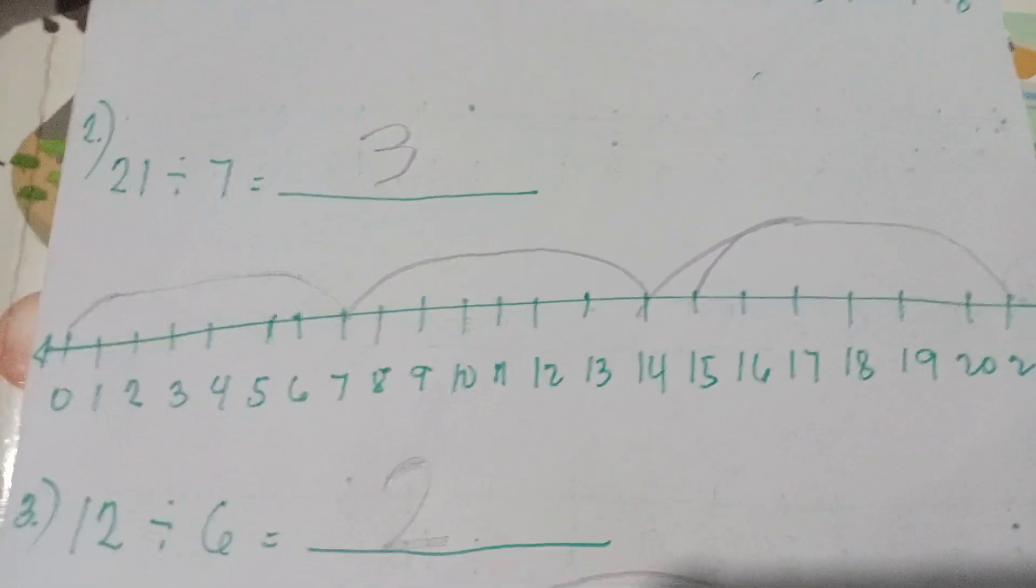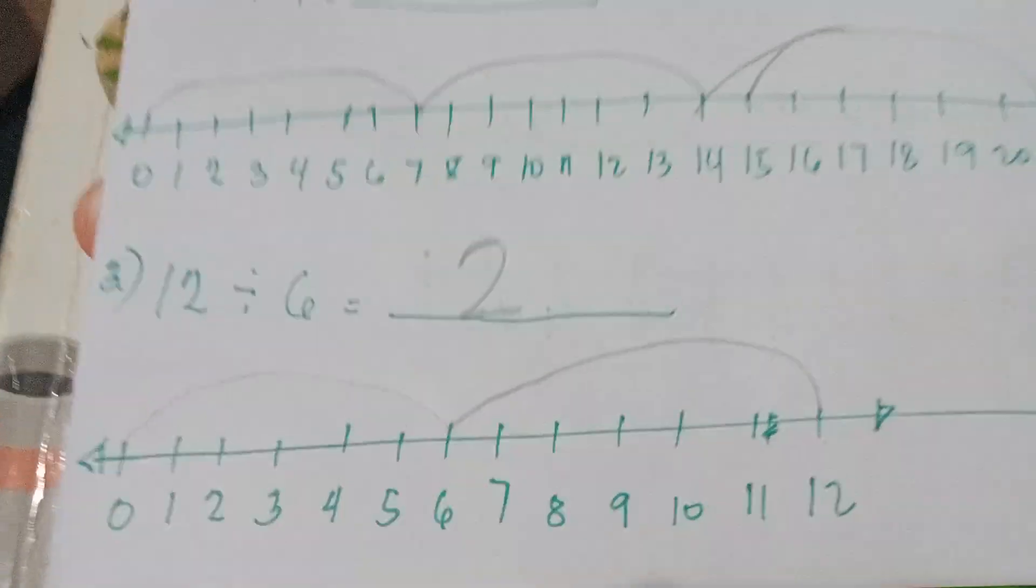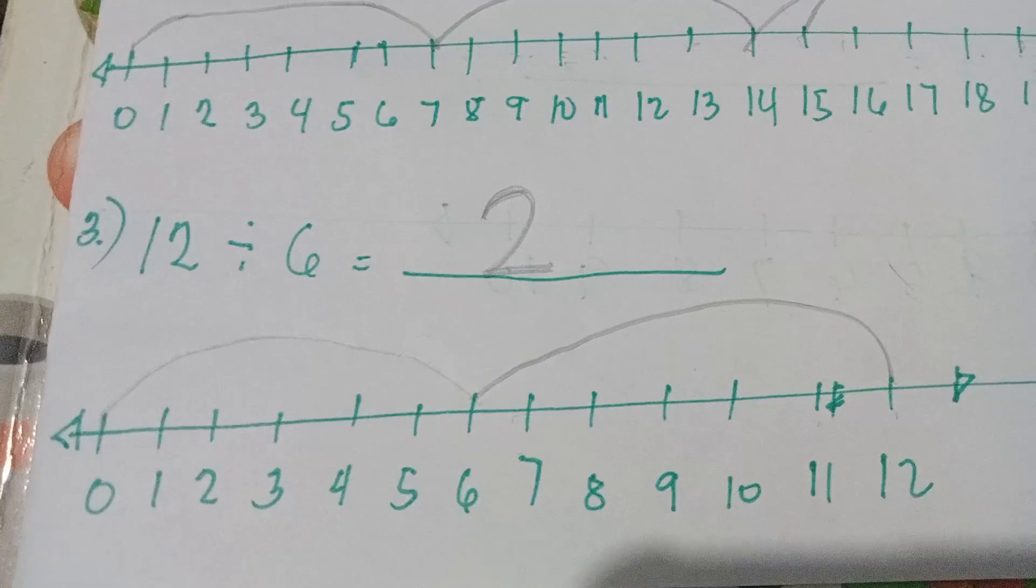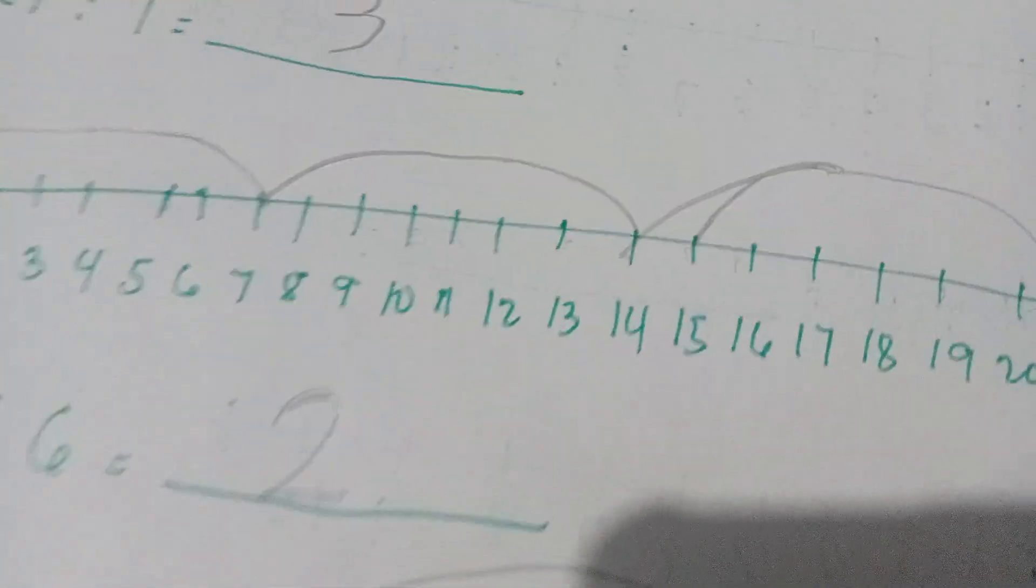Next is 12 divided by 6. He answered 2. Through our number line, I drew a number line from 0 to 12, divided by 6, and it shows 2.